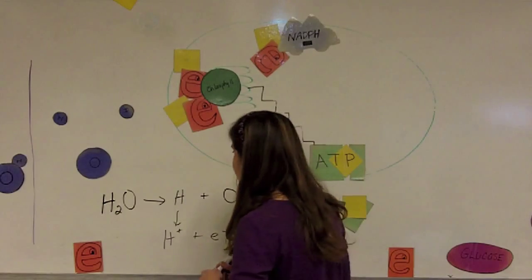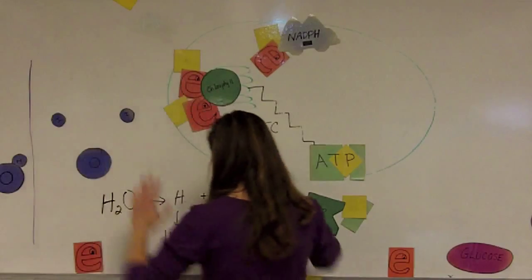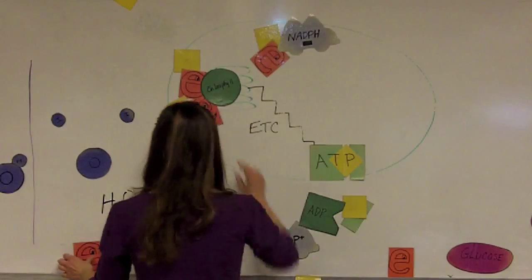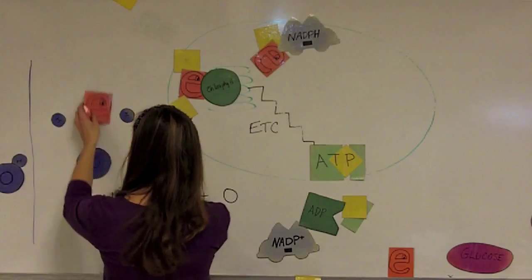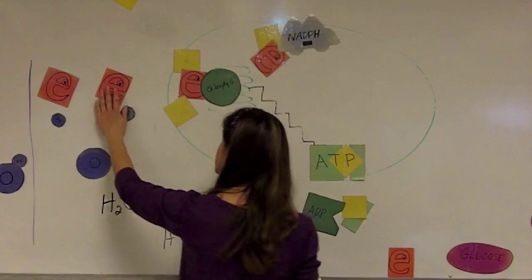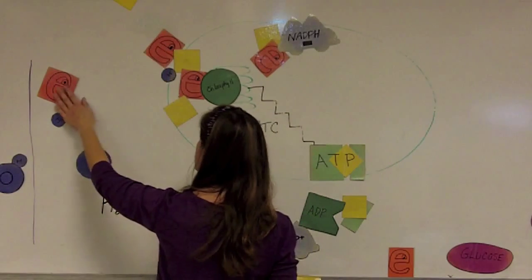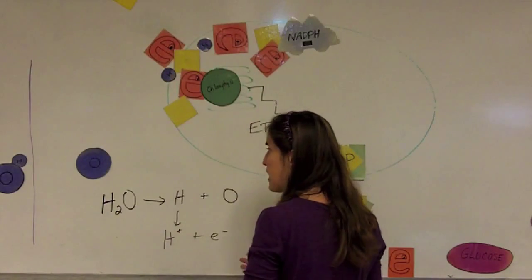So what happens is that these water molecules are split apart, releasing those two atoms. The hydrogen atoms are split into a hydrogen ion and an electron. The hydrogen ions and the electrons are then available in the thylakoid membranes to be used in the process of the light-dependent reactions.